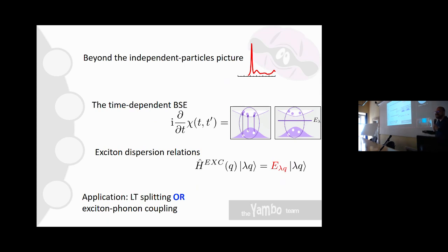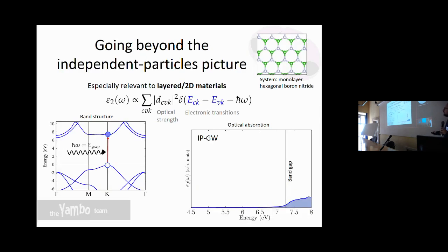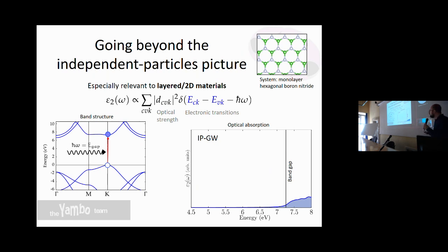As an additional example — in addition to what Maritza showed — I want to consider monolayer hexagonal boron nitride, because it's one of the most extreme cases I can think of where electron-electron interaction is super relevant.